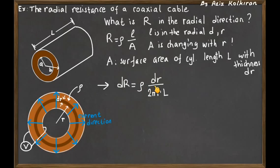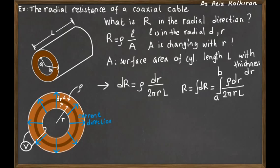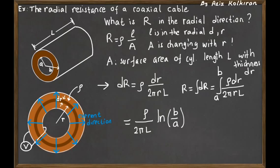Now we integrate these infinitesimal resistances to find the total resistance. The limits of integration are from R = A (inner surface) to R = B (outer surface). The constants ρ, L, and 2π come outside the integral, leaving the integral of dR/R, which is simply the natural logarithm. Evaluating at the limits gives the final expression: R_total = ρ / (2πL) · ln(B/A).